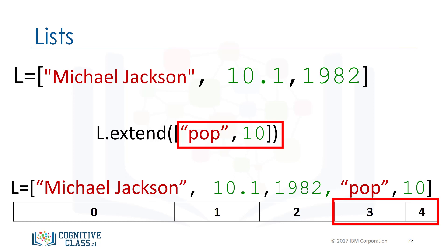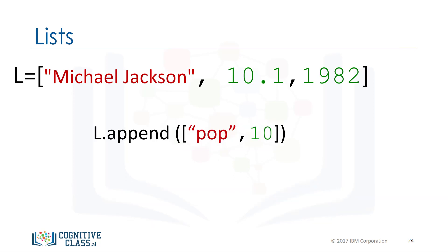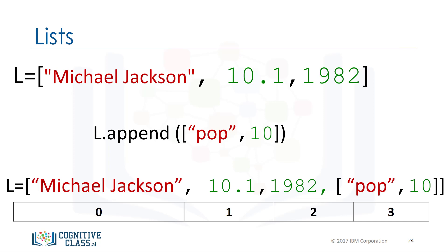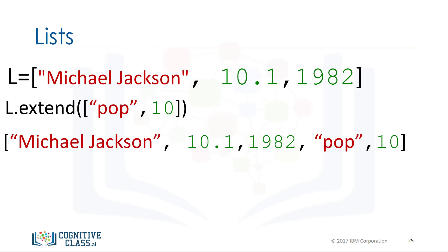To learn more about methods, check out our video on objects and classes. Another similar method is 'append'. If we apply append instead of extend, we add one element to the list. If we look at the index, there is only one more element, and index 3 contains the list we appended. Every time we apply a method, the list changes. If we apply extend, we add two new elements to the list.